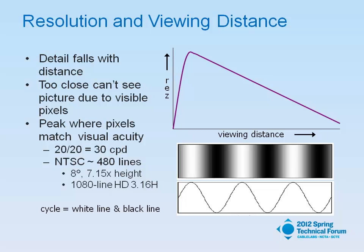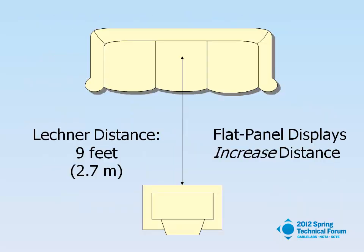Old NTSC television had about 480 active lines. That means 8 degrees — it divides 60 into 480. And if you work out the trig, that works out to maximum resolution at a distance of 7.15 times the screen height. For 1080-line HD, it would be 3.16 times the screen height. But people turn that definition of ideal resolution into a claim about how far people actually sit from their television sets — and in fact, people sit at a distance determined by their room size and their furniture.